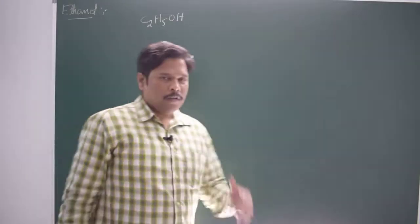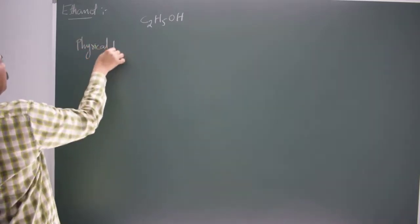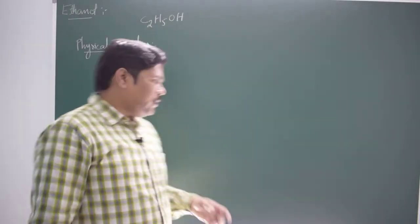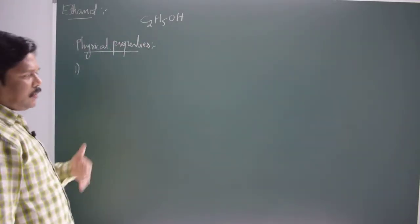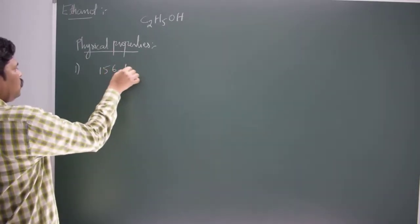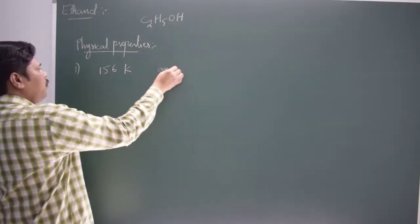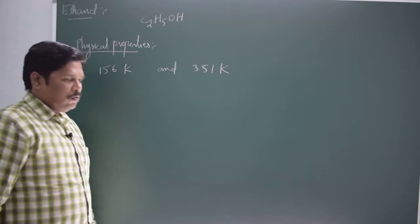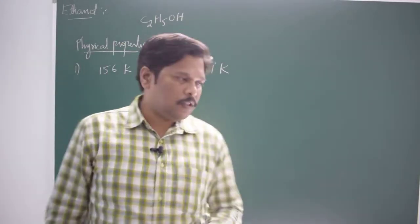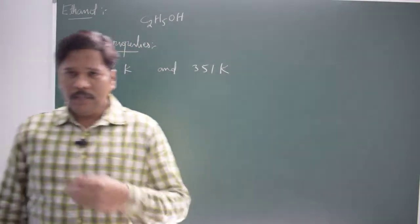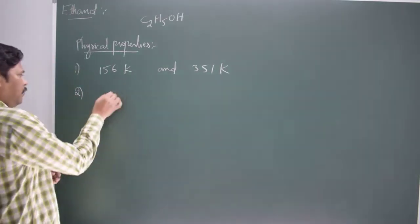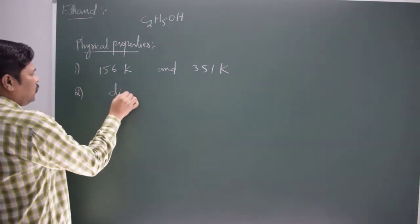Looking at the properties of ethanol, physical properties: ethanol or the common name ethyl alcohol is liquid at room temperature. Its freezing point is 156 Kelvin and its boiling point is 351 Kelvin. The second important physical property is ethanol is a colorless liquid. Ethanol has a distinct smell, you can easily identify the smell of this ethyl alcohol.